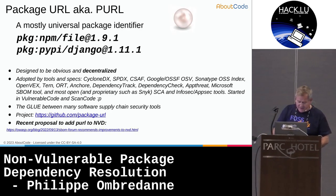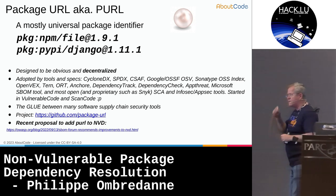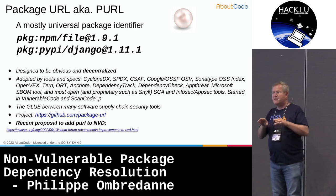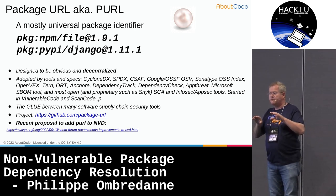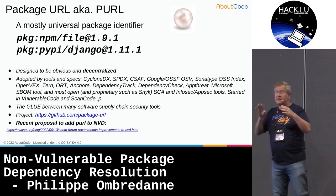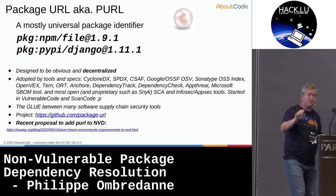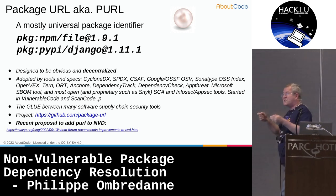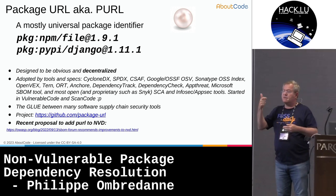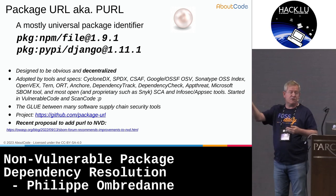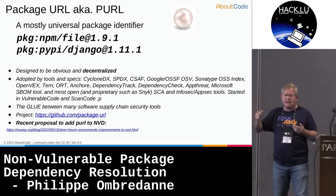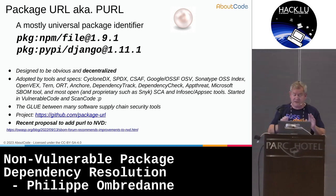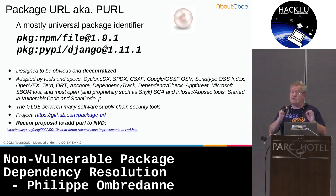Another thing called package URL — it's a way used nowadays by many software composition analysis tools and SBOMs to identify a package. It's very simple, like a URL with a PKG scheme: you specify the type of package, the ecosystem — npm, Maven and the likes — then the name and the version. There's no more than that, but it proves to be super useful.